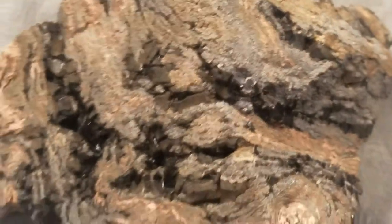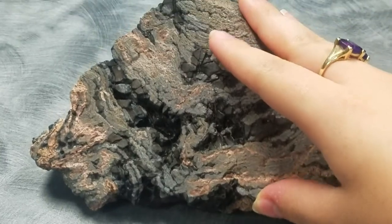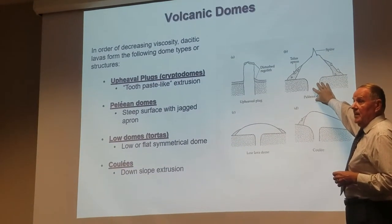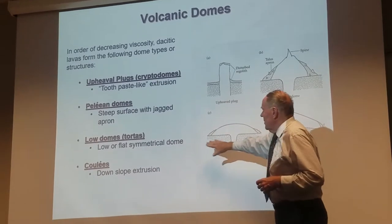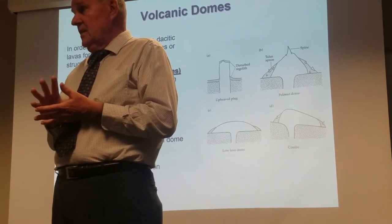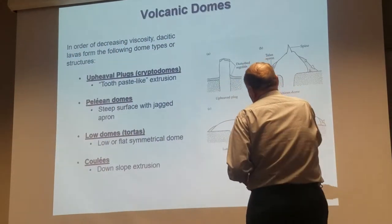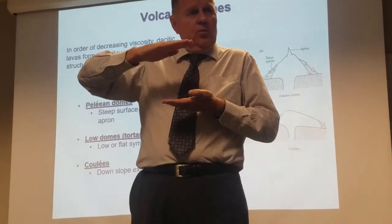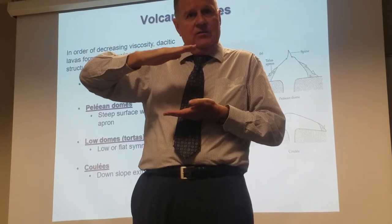Pelean domes have very steep sides with jagged aprons — these are the ones that get the name Pelean from Mount Pelée in Martinique, which completely destroyed the city of St. Pierre with a pyroclastic surge. Then there are low domes called tortas — flat, low, symmetrical domes. These are acidic lavas with relatively low viscosity. It's like a balloon filling in the center, but it has such low viscosity that it can't sometimes support its weight when it starts to build vertically. So it simply sags under its own weight and spreads out laterally.